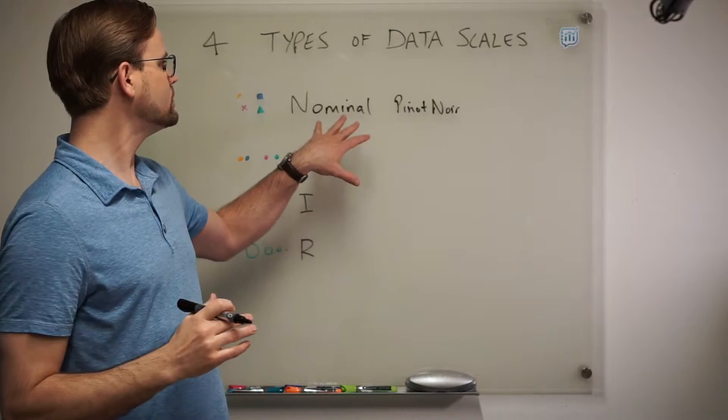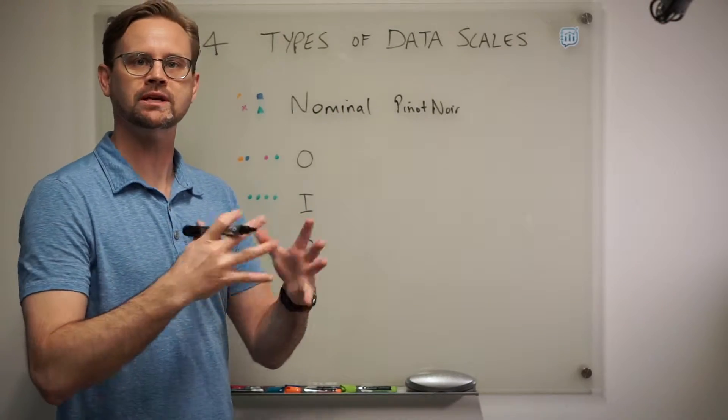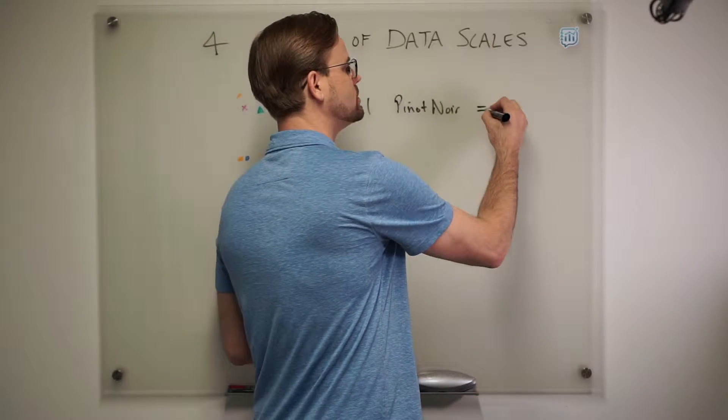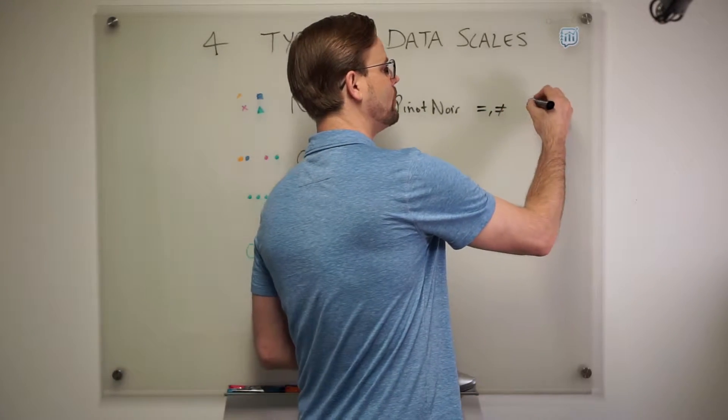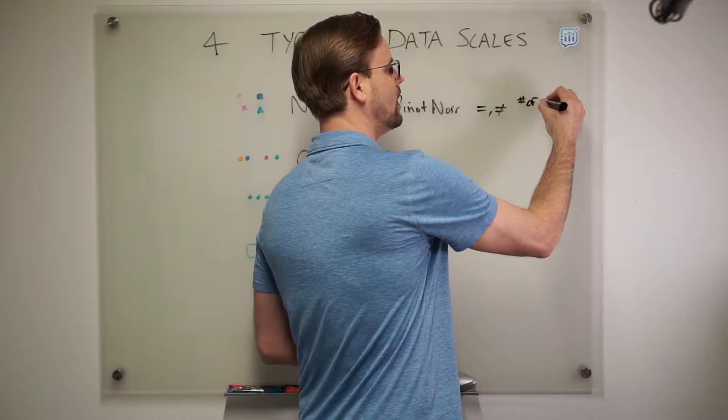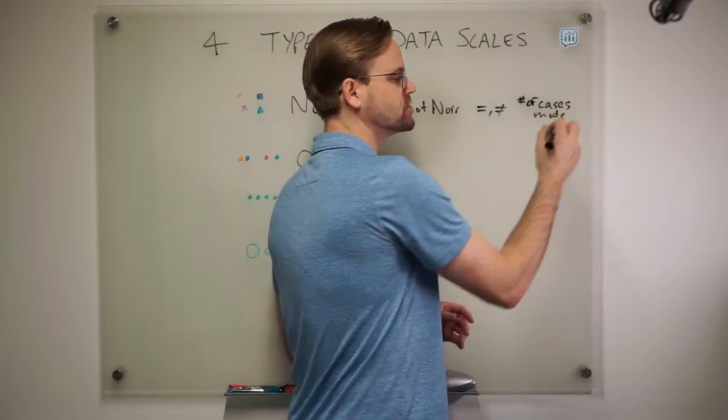What's interesting about nominal data scales is there's no notion of greater than or less than. It's just that you can tell if something is the same or not. So equal to or not equal to. But because of that, we can count the number of cases of a certain value and the mode. The mode is the most numerous one.